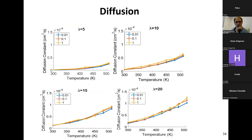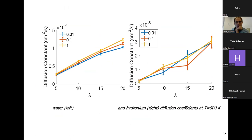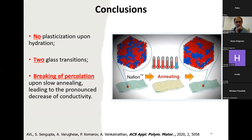Three conclusions: first, we see no plasticization — actually the opposite, anti-plasticization. Second, studying glass transition in hydrated membranes reveals two glass transitions: one associated with confined water and one with the polymer matrix. Third, breaking of percolation is an important effect that should be studied further, probably at a coarser-grained level.